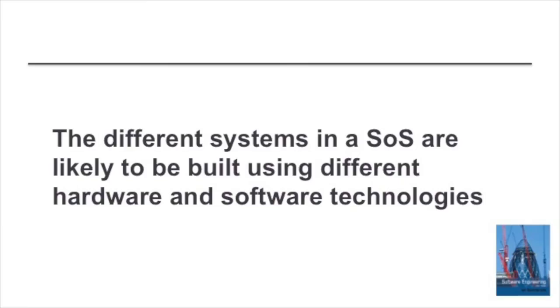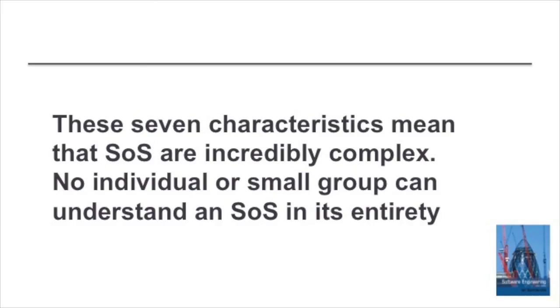Finally, heterogeneity: when systems of systems are integrated, the individual systems are not all developed using the same hardware and software technologies, so we need to find ways of making them work together. In summary, a system of systems is created when we take two or more independent systems and integrate them to create enhanced functionality. But systems of systems are incredibly complex — the nature of their interactions makes them a very significant software and systems engineering challenge to develop, evolve, and manage.